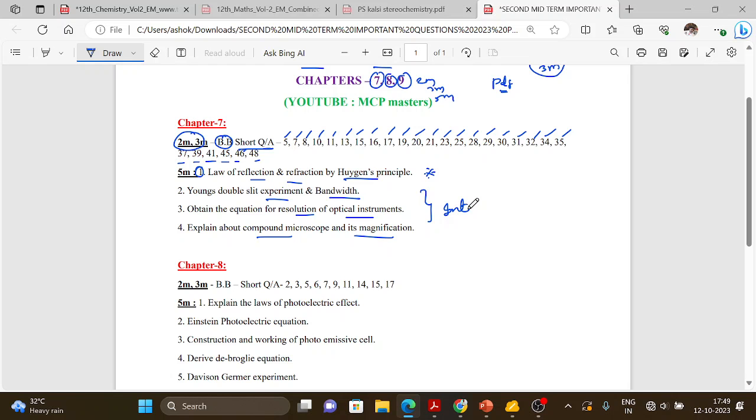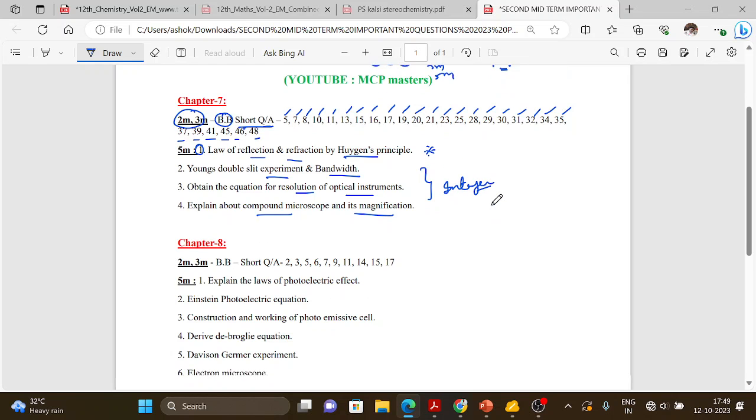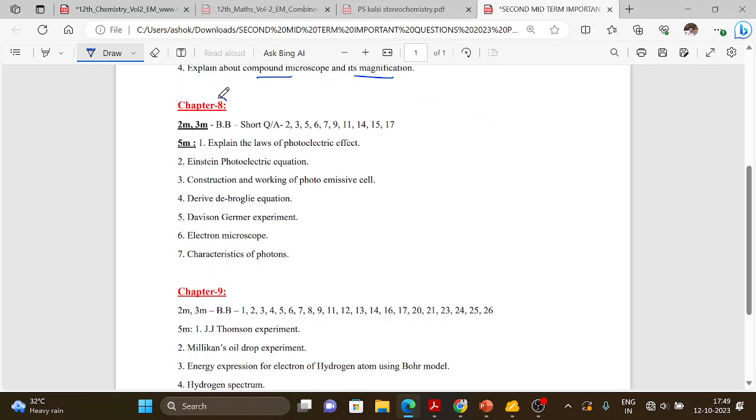For Chapter 8, two mark and three mark book back short question answers: 2, 3, 5, 6, 7, 9, 11, 14, 15, 17. For three mark, important topics include photoelectric equation, de Broglie equation, and statistics of photon.